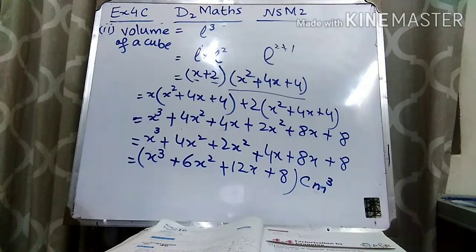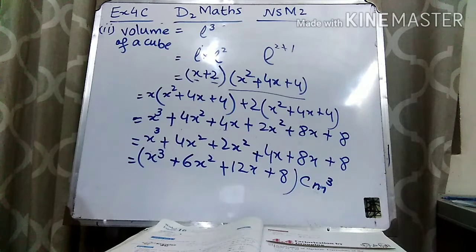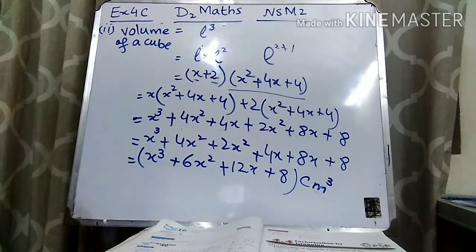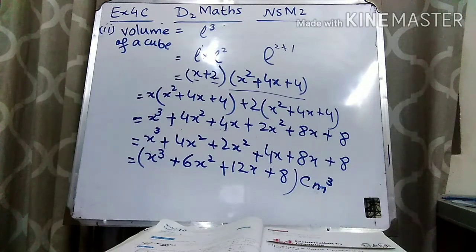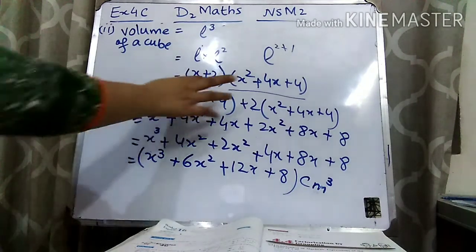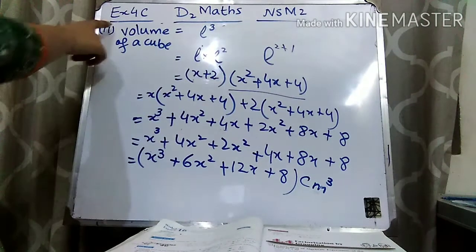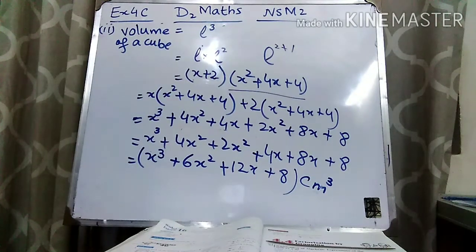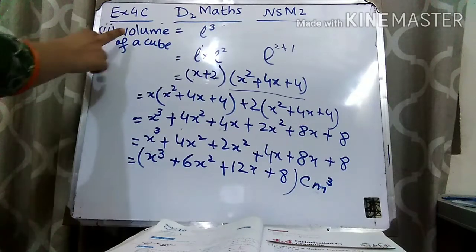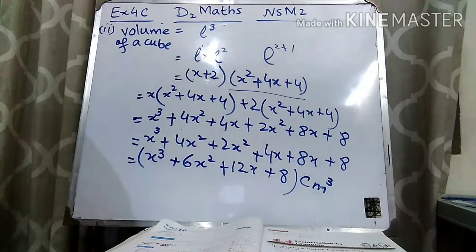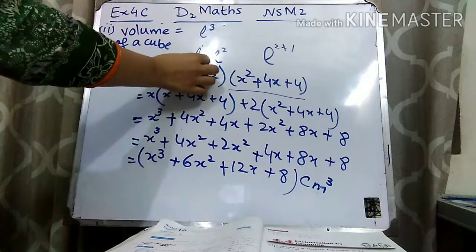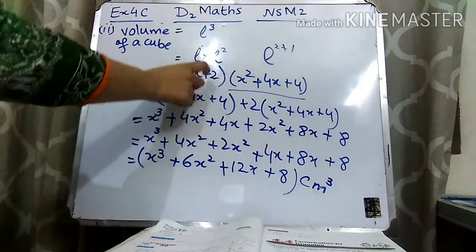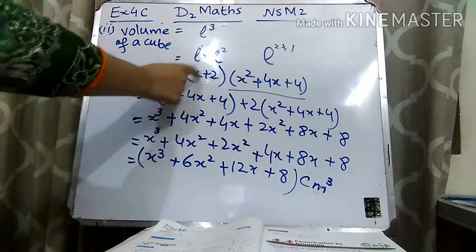Let's revise what we have done in this question. In part one we found the length using the formula for the area of a cube — area equals L². The area was given as x² + 4x + 4, so we wrote L² = x² + 4x + 4. Then we used the completing the square method and got L = (x + 2)² under square root, giving L = x + 2.